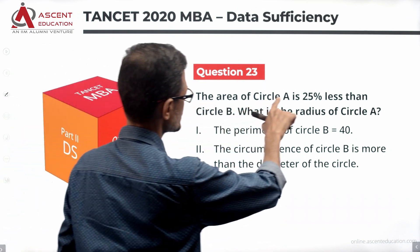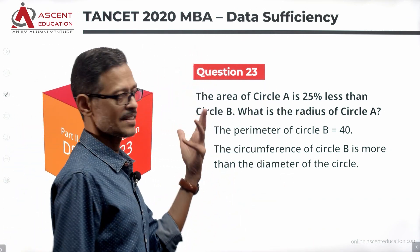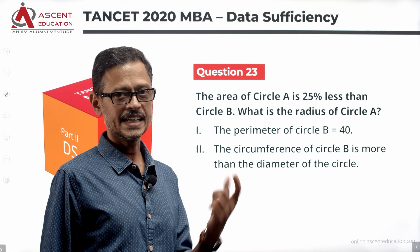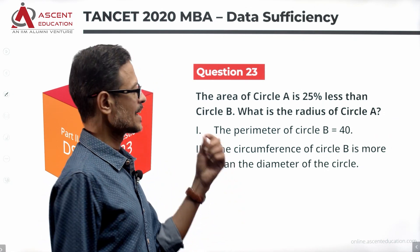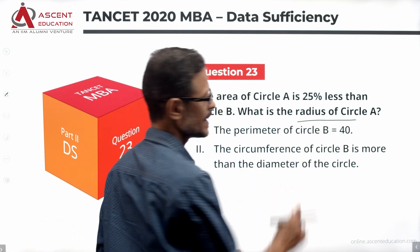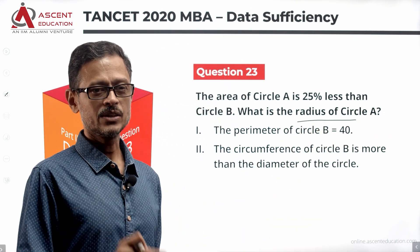The question is: the area of circle A is 25% less than the area of circle B. What is the radius of circle A? That is what we are going to find.